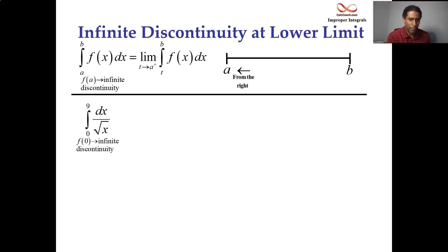So f of zero causes an infinite discontinuity or the function evaluated at zero. You can't do it. The function, that's not even in the domain. Yet, we're still going to integrate this. How? Rip out the zero, put in a variable, let that variable approach zero from the right-hand side.